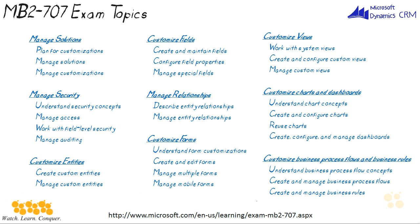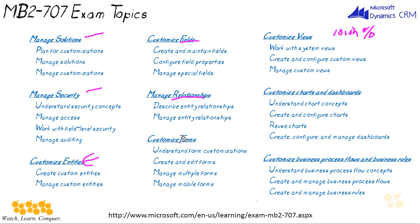There are nine categories — I don't think I've ever seen an exam with nine categories in all my years. The good news is each category is only about ten percent. The categories are: solutions, security, entities, fields, relationships, forms, views, charts and dashboards, and business process flows and business rules. There's nothing here that we're not going to talk about.